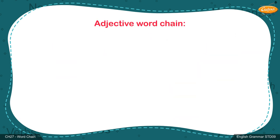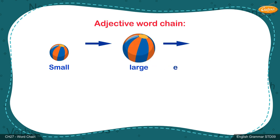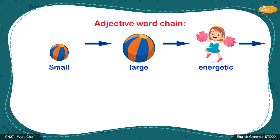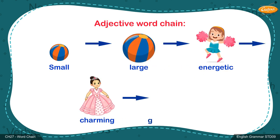Similarly, we can do the word chain of adjectives. Example: small, large, energetic, charming, good.